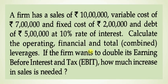So the question has come to your screen. First we will read the question and then solve it. A firm's sales is 10 lakh rupees, variable cost is 7 lakh rupees, fixed cost is 2 lakh rupees, and debt is 5 lakh rupees at a 10% rate of interest. We need to calculate operating, financial, and total or combined leverages.